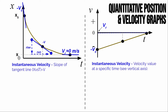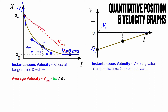Now, what about average velocity? Average velocity equals displacement divided by time. On a position-time graph, you draw a straight line from the initial position to the final position, and the slope of that line represents the average velocity over the entire time interval — the rise (or fall) divided by the run.